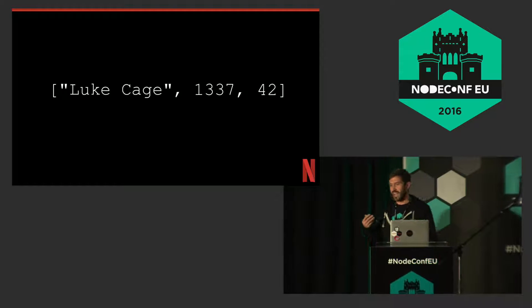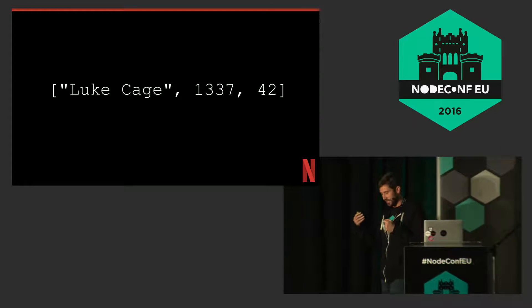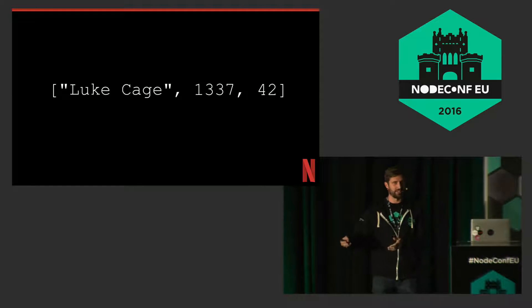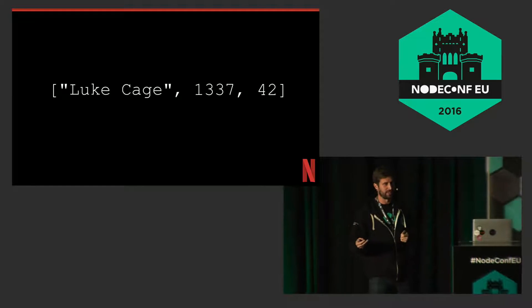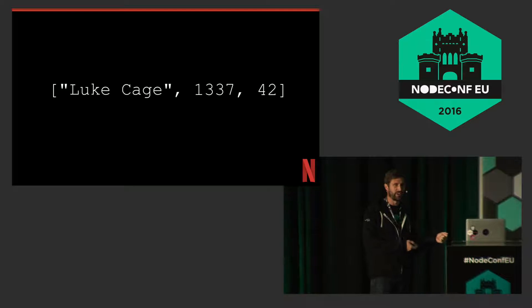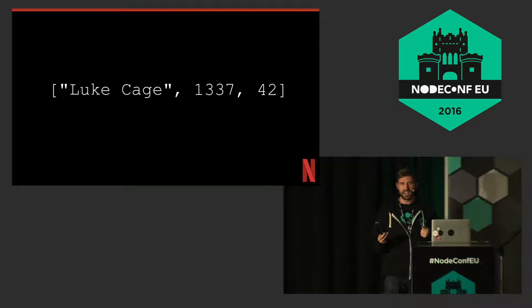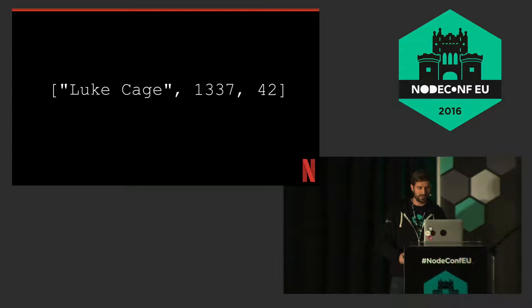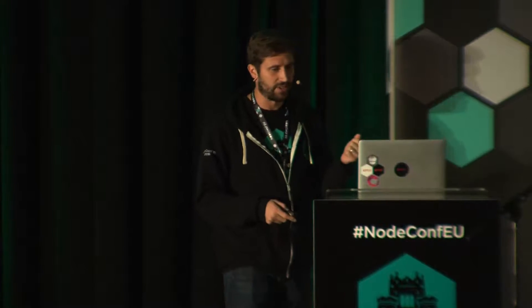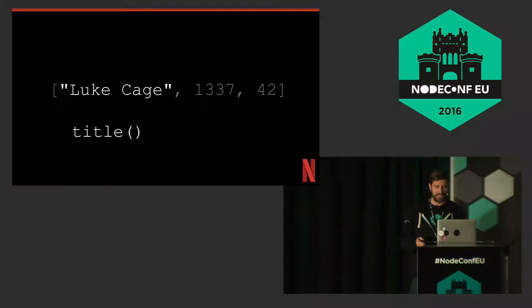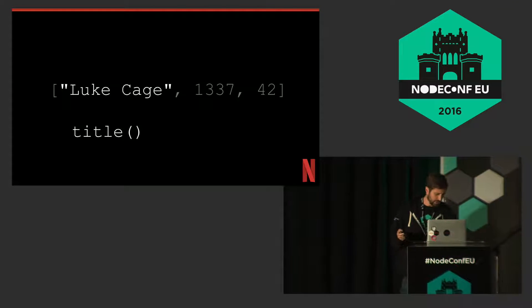The thing is, I don't want to have in my code data[0] is my title, data[1] is my ID, data[2] is my star rating. That would be very crappy, because if you changed anything you'd break your whole system. Ideally you'd want some way to access this data without worrying about how it works underneath the hood. If I call title, it should return Luke Cage. So let's build that interface.